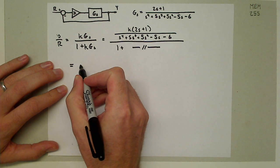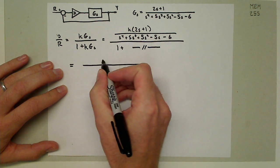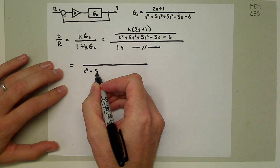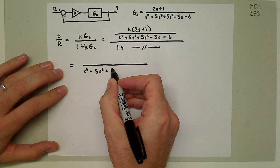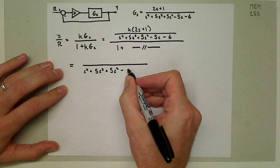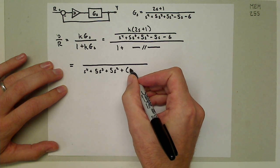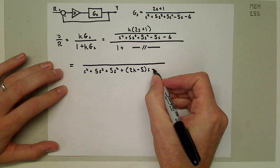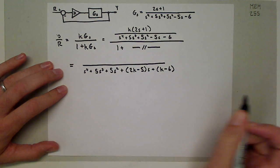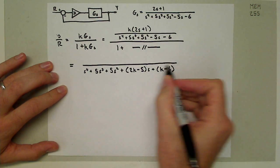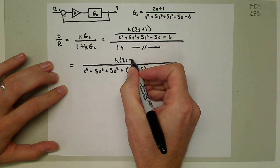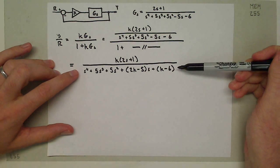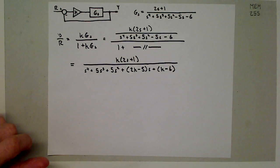We get on the top K(2s+1), and on the bottom we get s^4 + 5s^3 + 5s^2 plus the quantity (2K-5) times s, and then plus the quantity (K-6). What we want to see is what is the range of K's that actually stabilize this denominator, and we're going to use the Routh-Hurwitz method for that.